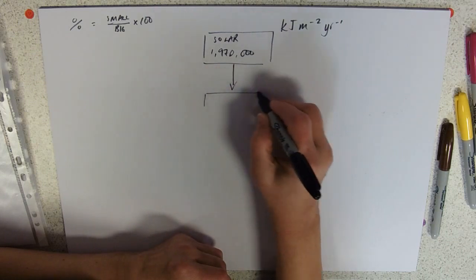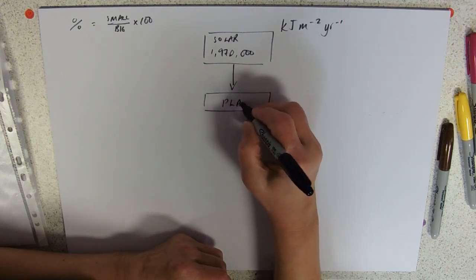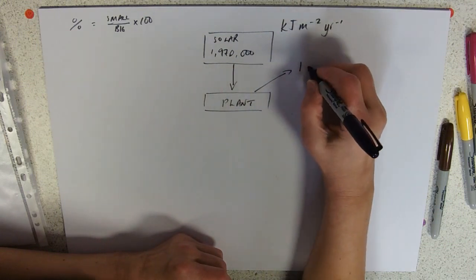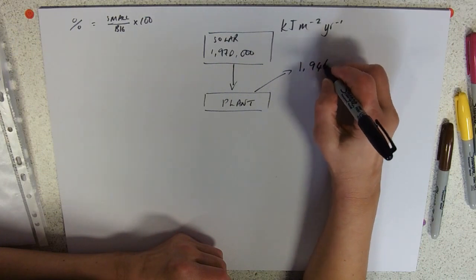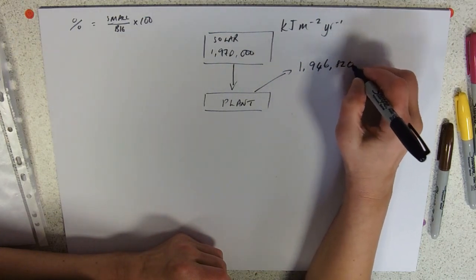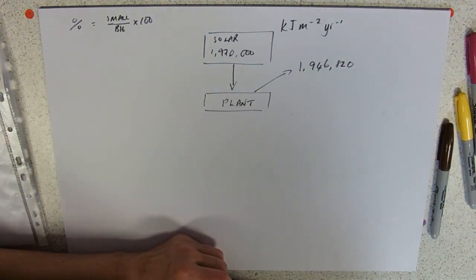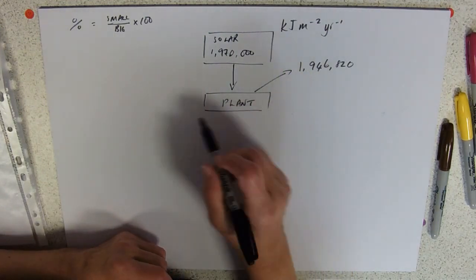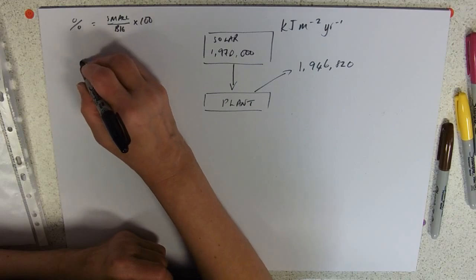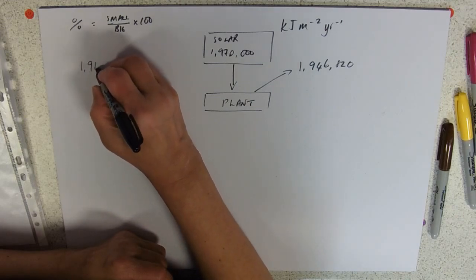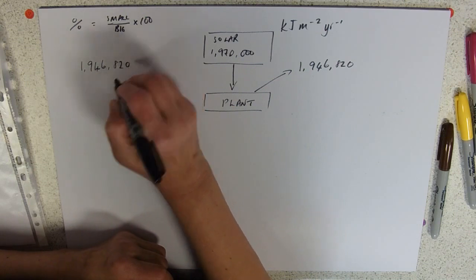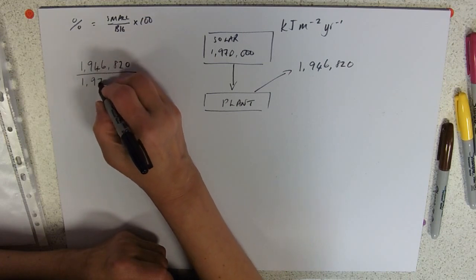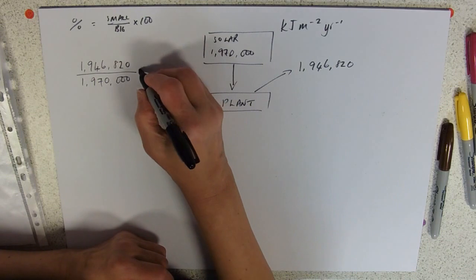And that is going down into our plant. We're told that the stuff that the plant doesn't use is 1,946,820 kilojoules per meter squared per year. So we can work out the percentage of efficiency of transfer. That would be the little number, 1,946,820, over the solar energy coming in, and then multiply by a hundred.